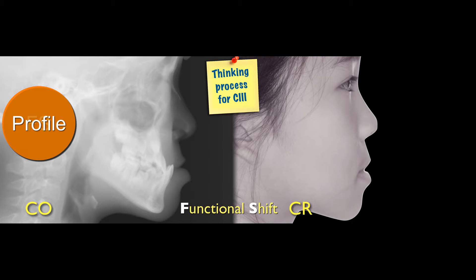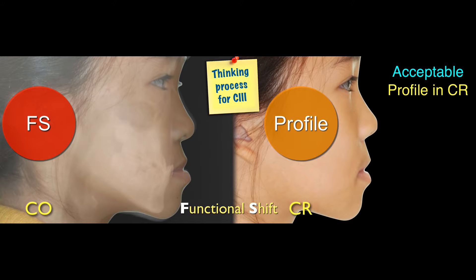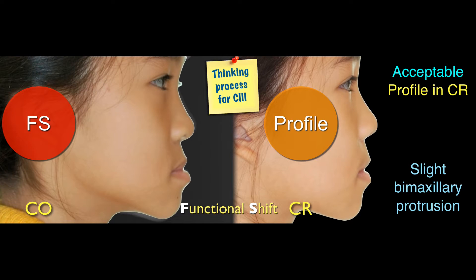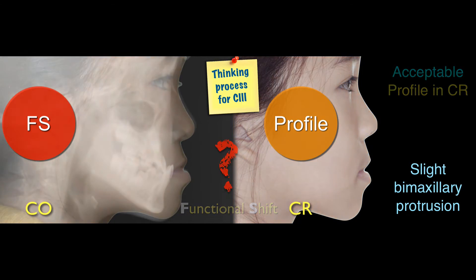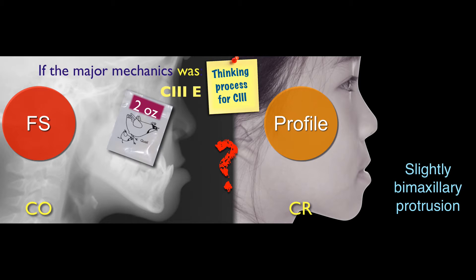Ladies and gentlemen, it's quite difficult. I have to remind you: every time you check the ceph, look at the functional shift. If the patient has a functional shift, look at the CR profile. Because this girl, the CR profile is quite acceptable — maybe slightly, with some mandibular protrusion. Compared to the CO profile, the CR profile is pretty different. If CR profile misleads you, your treatment will be bad.